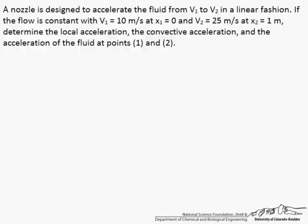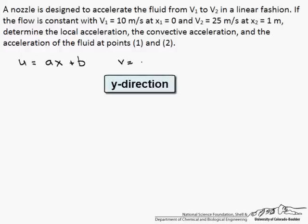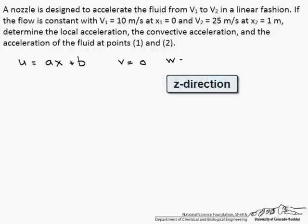The problem says it is a linear fashion, so we are going to write our velocity such that u equals ax plus b. There is no velocity in the y direction, there is no velocity in the z direction.